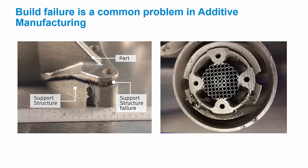When we started developing Netfab Simulation, the goal was to be able to predict any common failure mode brought upon by excessive distortion or residual stress. Here's an example where a part actually distorted to the point that it delaminated from its support structure and the build failed. And here's another part that actually distorts upward in the build direction through the top of the powder bed and gets hit by the recoater blade when it goes to rake a new layer of powder — that part got ruined as well.